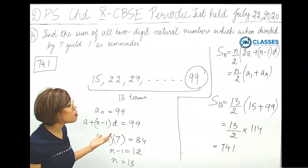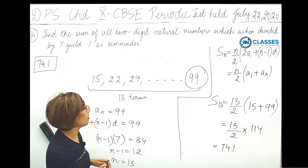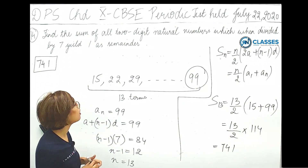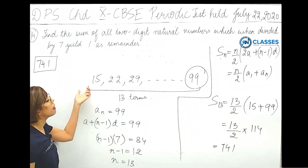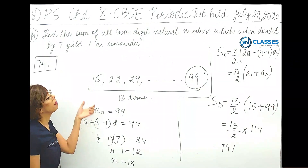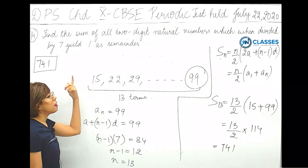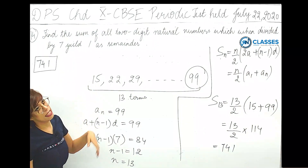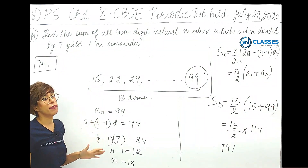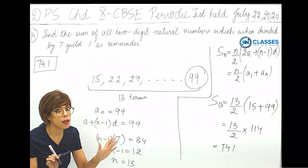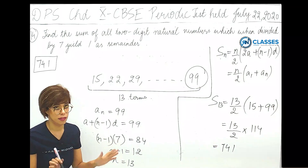You need to state clearly that this is an AP with first term 15 and common difference 7 if you want full marks.